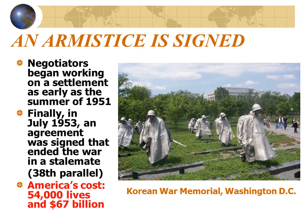Negotiators in Korea began working on a settlement as early as the summer of 1951. Secretary of State Alan Dulles finally reached an agreement in July of 1953 — the war would end as a stalemate, with the North and South stopping exactly where they had begun at the 38th parallel. Dulles achieved this by threatening China and North Korea with nuclear weapons if they did not sign the armistice. The war cost 45,000 American lives and $67 billion dollars. Very little was gained, and most Americans didn't see the point.